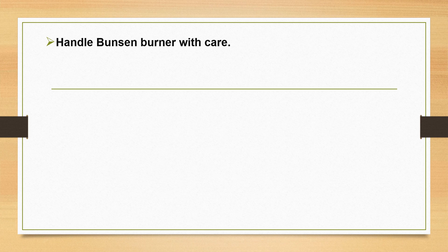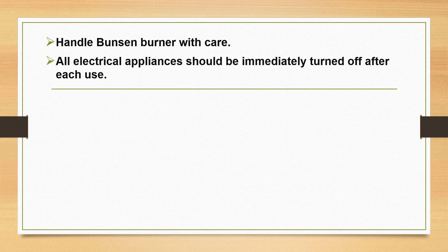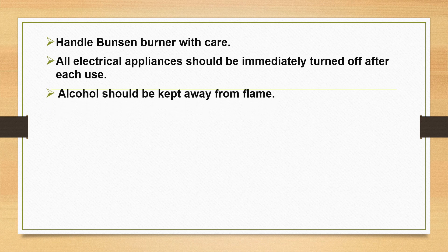The Bunsen burner should be handled with care as it is very dangerous, and it should be turned off when not in use. All electrical appliances such as ovens, autoclaves, centrifuges and other devices should be immediately turned off after each use. Alcohol should be kept away from flames, as alcohol catches fire easily and may result in accidents.